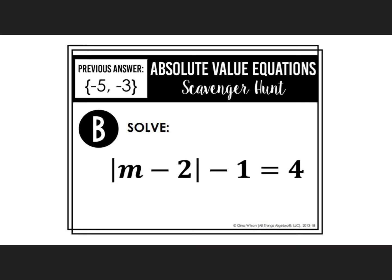When we solve absolute value equations, we want to make sure that we isolate the absolute value. For example B, I would like to move things around so that the absolute value of M minus 2 is the only thing on the left side. So the first thing I'm going to do is add 1 to both sides.